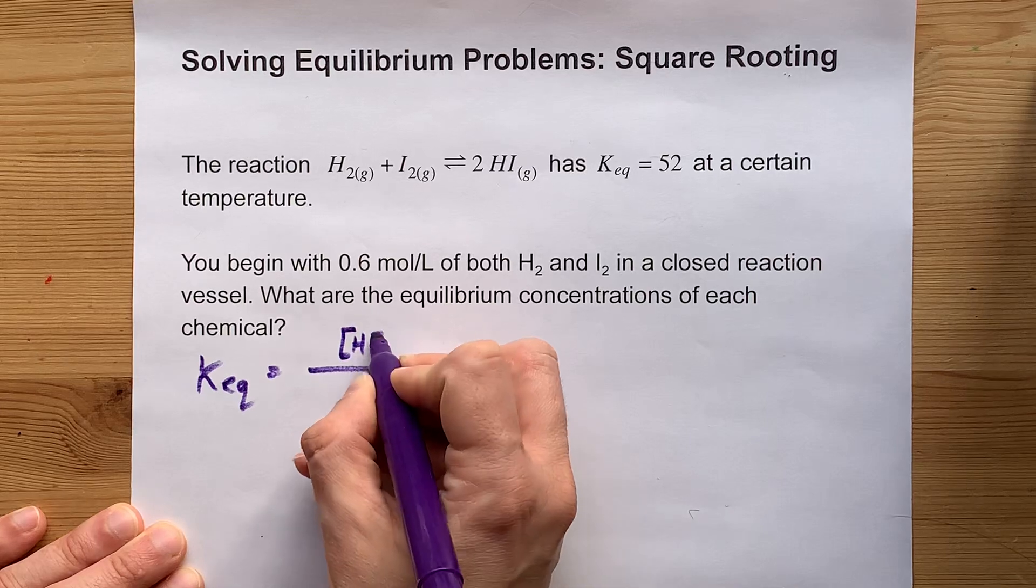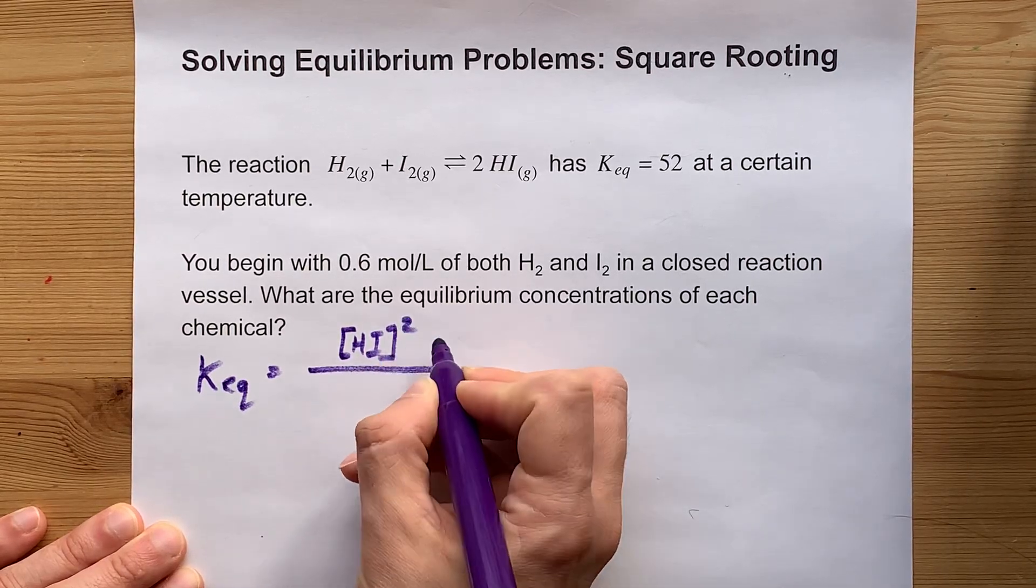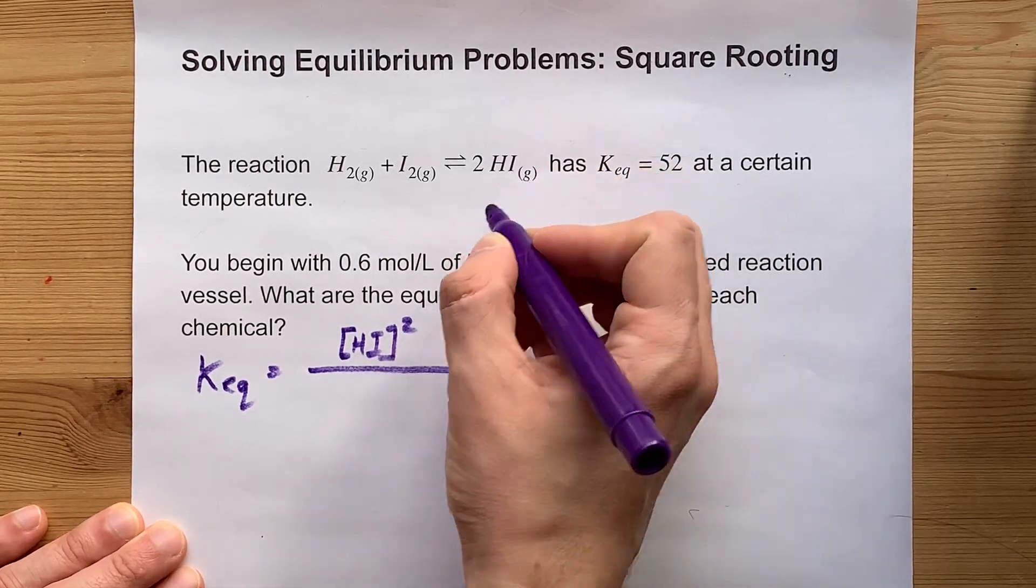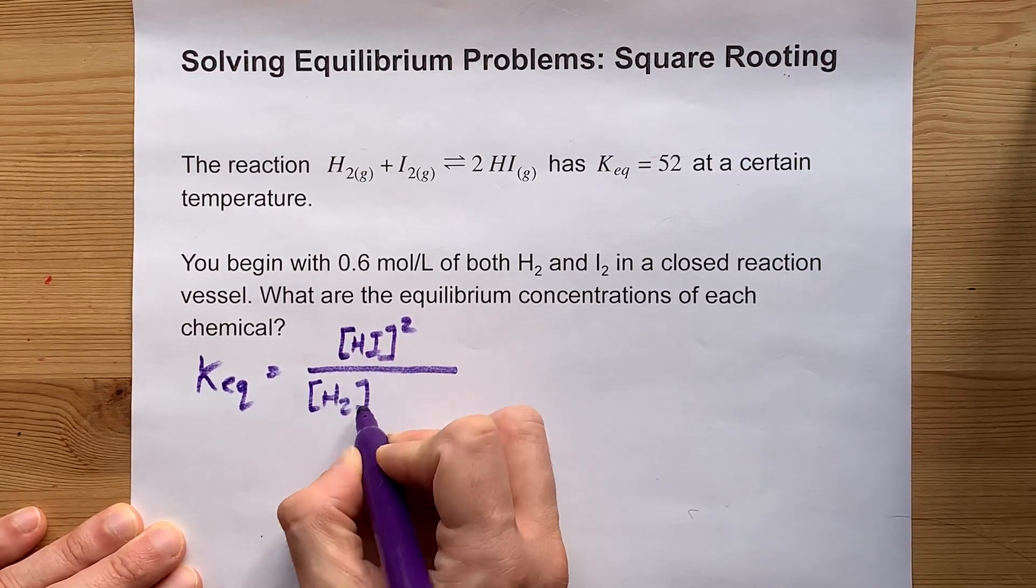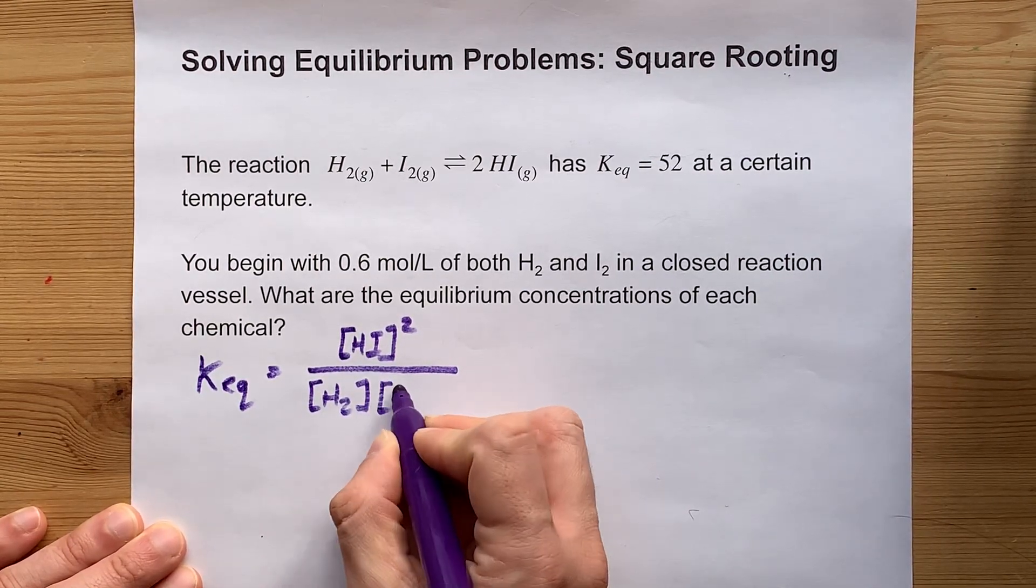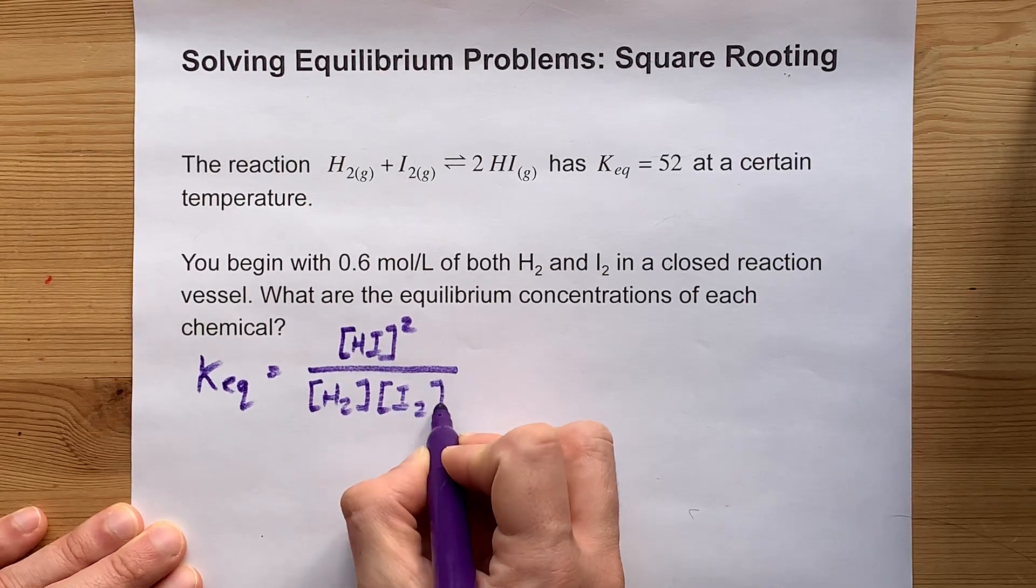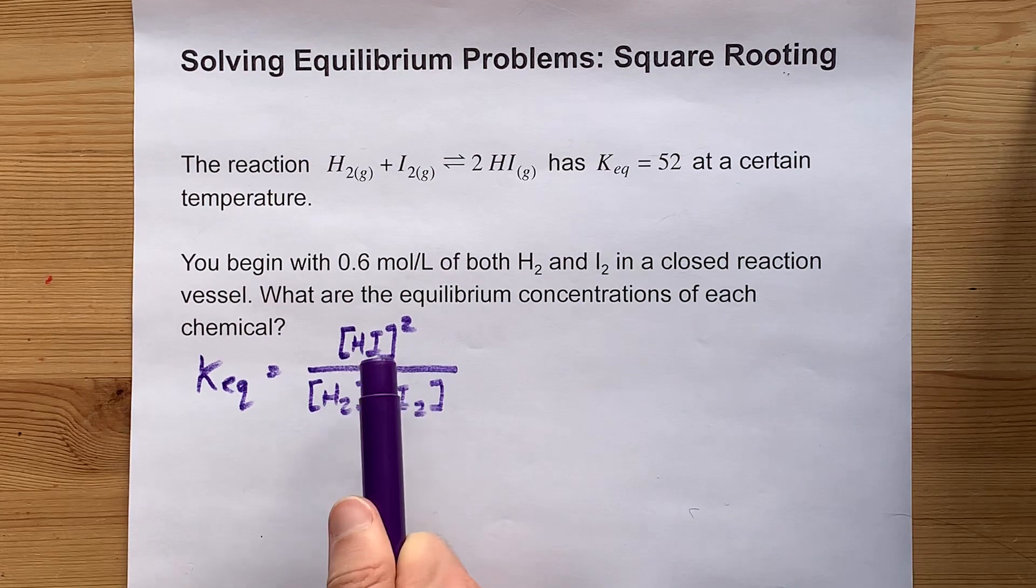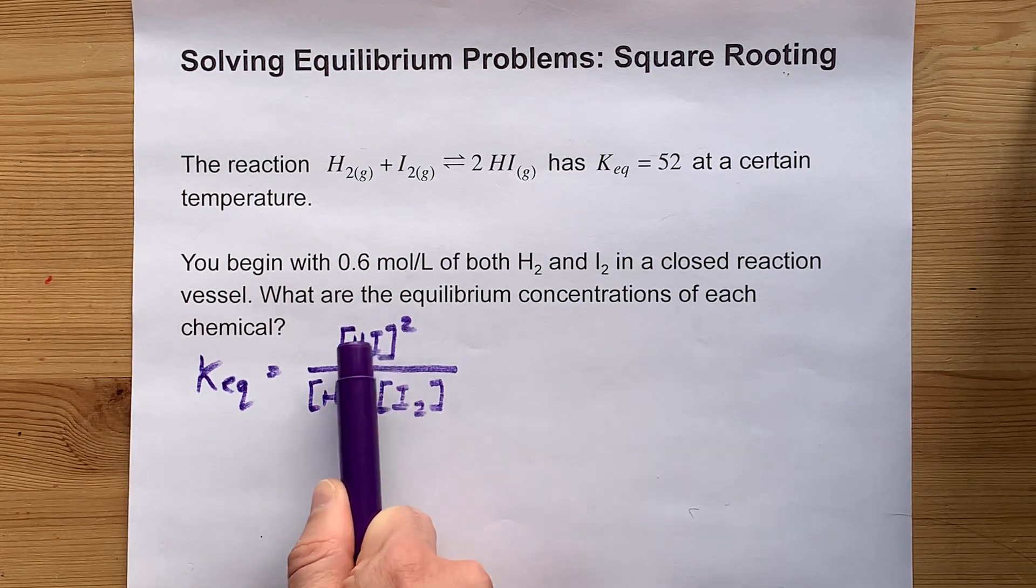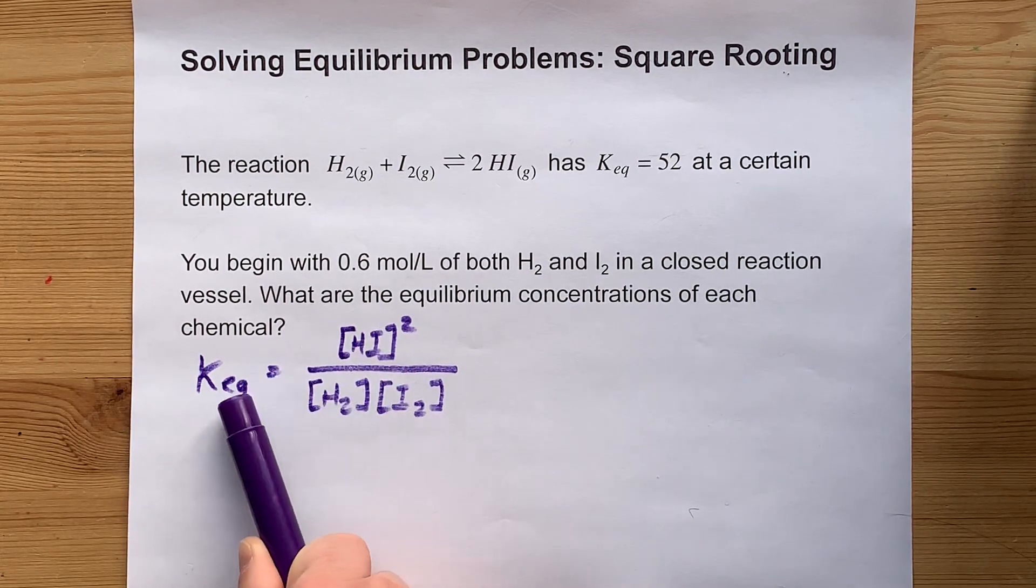We have the concentration of HI squared on top because there's two HI's in the chemical reaction, the concentration of H2 on bottom to the power of one, and the concentration of I2 on bottom to the power of one. The idea here is if you knew the equilibrium concentrations of these, you could plug them in to calculate KEQ.